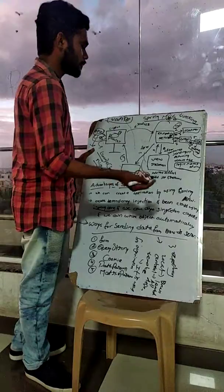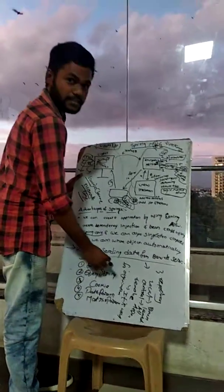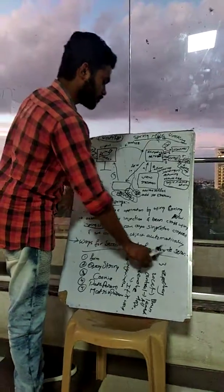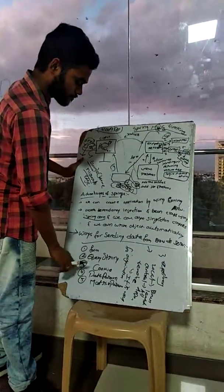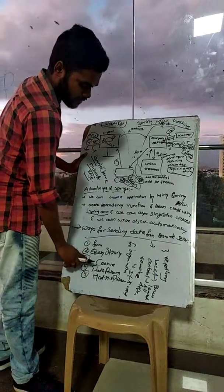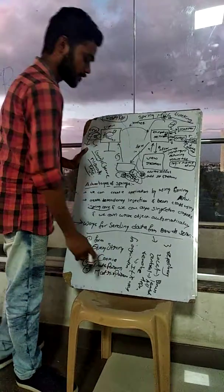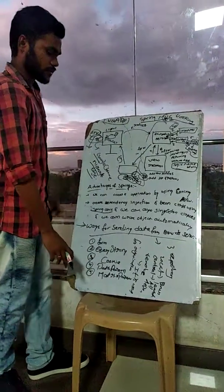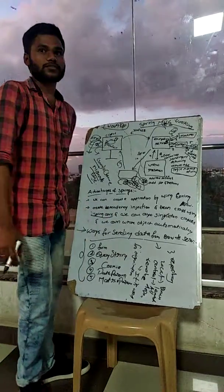For sending form data from browser to server, we use five methods: form data, query string, cookie, path parameter method, and matrix parameter method. All these are ways of sending data from browser to server. Thank you.